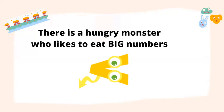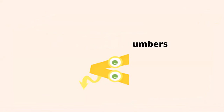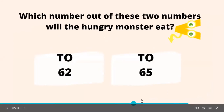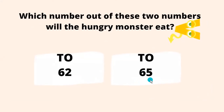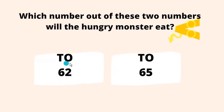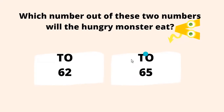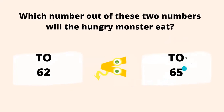It's time for practice! There is a hungry monster who likes to eat big numbers. Which number will the hungry monster eat? We have to compare 62 and 65. The digit at the leftmost place is 6 for both numbers. Since the tens digits are the same, we move to the ones place: here it is 2 and here it is 5. Can you guess which number is bigger? Perfect — 65 is greater than 62, so the hungry monster is going to eat 65!